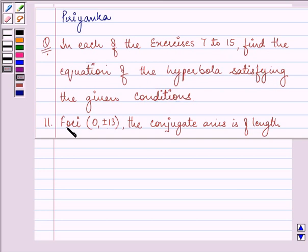Now here we are given foci as (0, ±13) and the conjugate axis is of length 24.